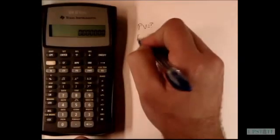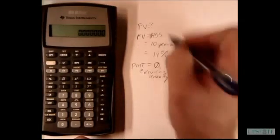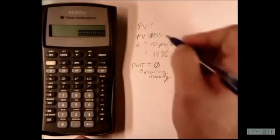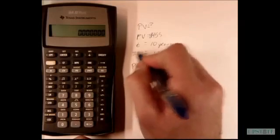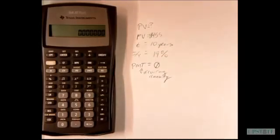So what we're going to do here is we're going to have a future value of 455. Our number of time periods is 10 and our interest rate is going to be 19%.